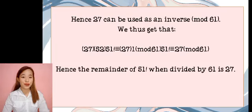Hence, 27 can be used as an inverse mod 61. We thus get that 27 times 52 times 51 factorial is identical to 27 times 1 mod 61, and 51 factorial is identical to 27 mod 61. Hence, the remainder of 51 factorial when divided by 61 is 27.